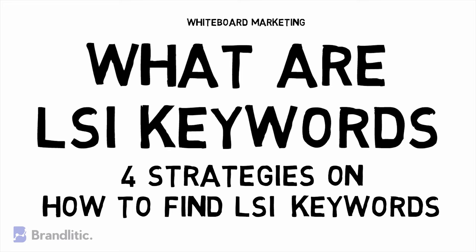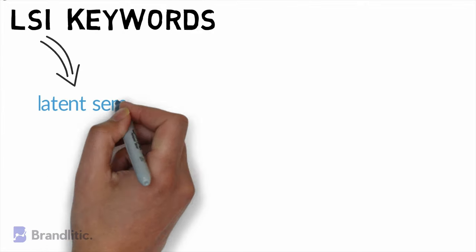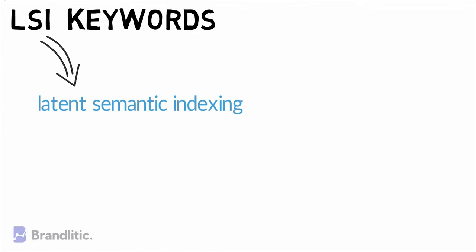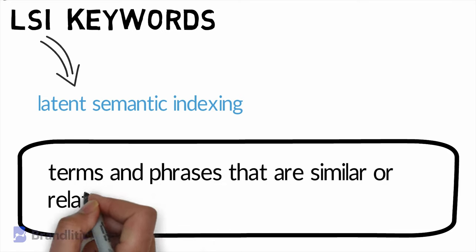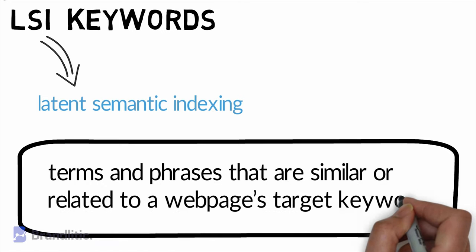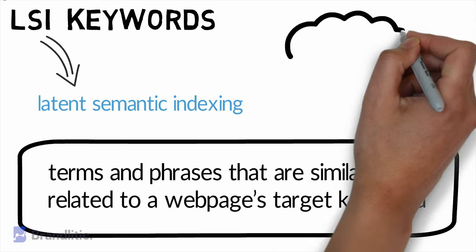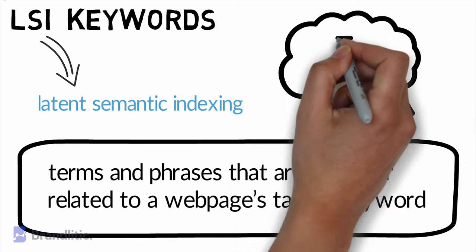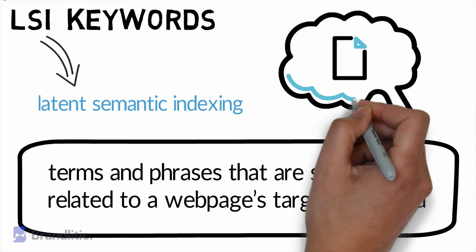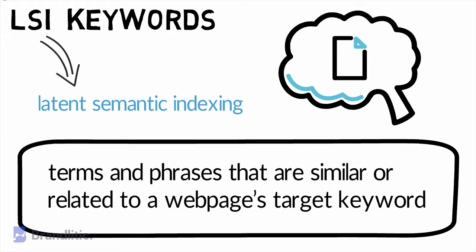So let's get started. LSI stands for Latent Semantic Indexing, and LSI keywords are terms and phrases that are similar or related to a web page's target keyword. Their purpose is to help search engines better understand the content of the page by adding context and connecting the copy to a target set of keywords.